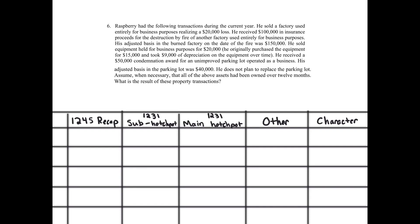In problem six, Raspberry had the following transactions during the current year. He sold a factory used entirely for business purposes, realizing a $20,000 loss.